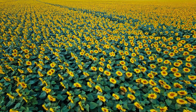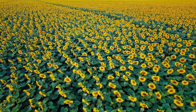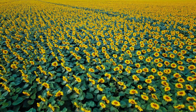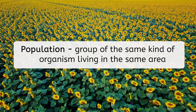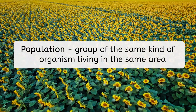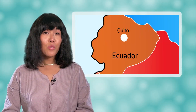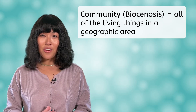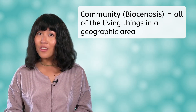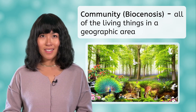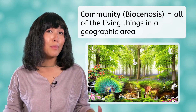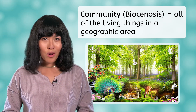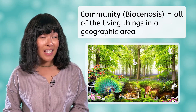We've looked at a lot of examples of individual organisms, but what about groups of organisms living and interacting together? A population is a group of the same kind of organism living in the same geographic area. That geographic area could be the whole Earth, or it could be smaller, like a single city or country. But populations usually coexist with other species that share their habitat. All of the living things in the same geographic area are known as the community, or biocenosis. A biocenosis may contain multiple plant species, animals, and other microscopic organisms.